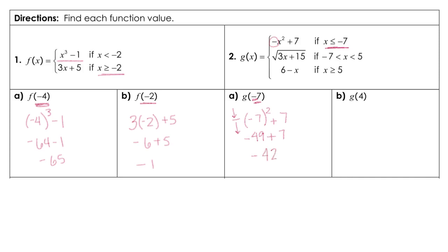g at 4 — 4 is going to fall somewhere between negative 7 and positive 5, so I need to sub in there. I'm going to have the square root of 3 times 4, which is 12 plus 15, so that's the square root of 27, and that reduces down to 3 times the square root of 3.